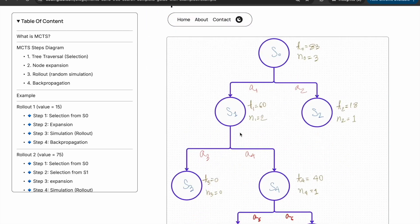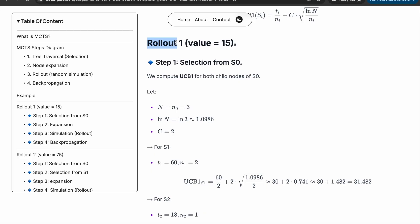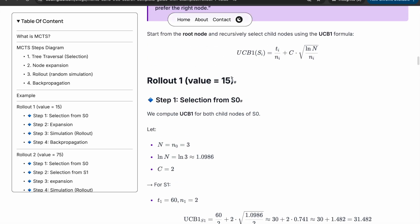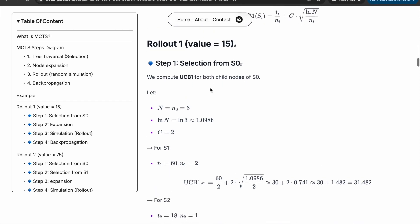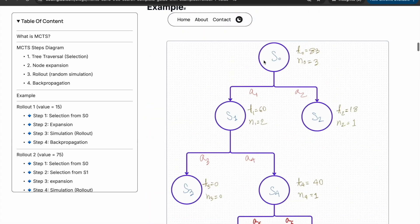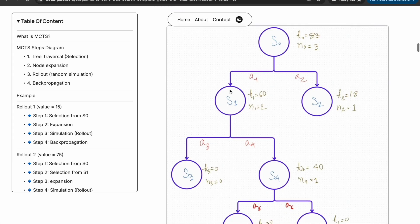We will solve this example and everything will be clear. Let's begin with the first rollout, which will return a terminal value of 15. Step one is the selection step. The selection is done using the UCB1 formula: t_i / n_i + C * sqrt(ln(N) / n_i), where t_i is the total value of node s_i, n_i is the number of times node s_i was visited, C is a constant equal to 2, and capital N is the number of total visits of the parent node. In the selection from s0, the root node, there are two actions that can be taken: a1 and a2. We need to select either s1 or s2 using the formula UCB1.